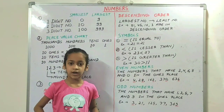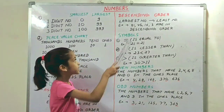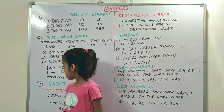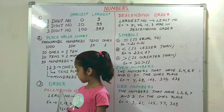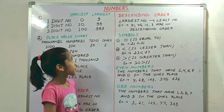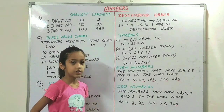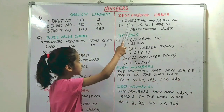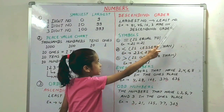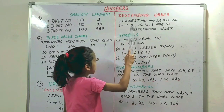Our next is decreasing order. You can call ascending order increasing order also. In descending order you have to arrange the number from the largest number to the least number. Example: 81...